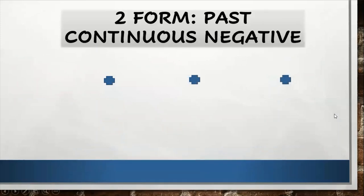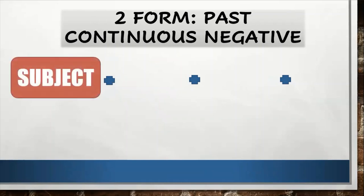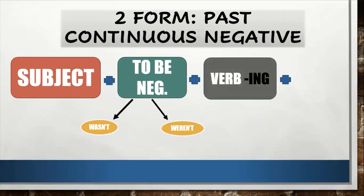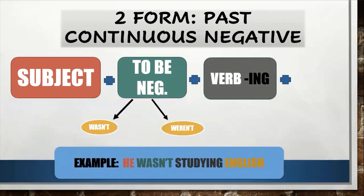Past continuous negative: subject + to be negative in past + verb ending in -ing + complements. We use 'wasn't' for first and third singular person, and 'weren't' for the rest. The verb still ends in -ing. For example: he wasn't studying English. 'He' is the subject, 'wasn't' is to be negative, 'studying' ends in -ing, and 'English' is the complement.